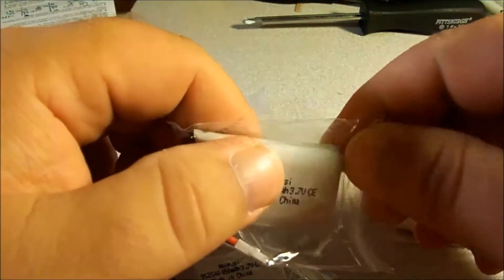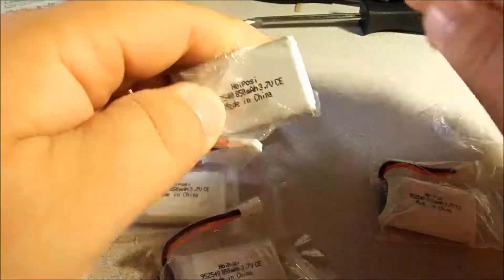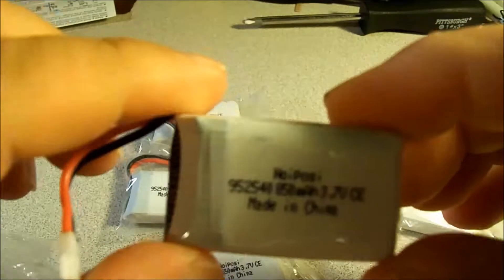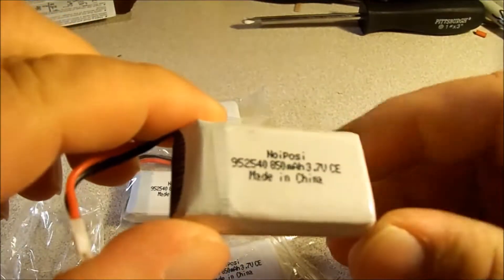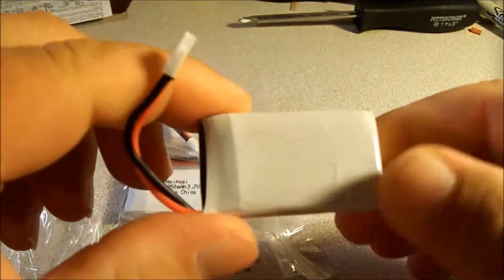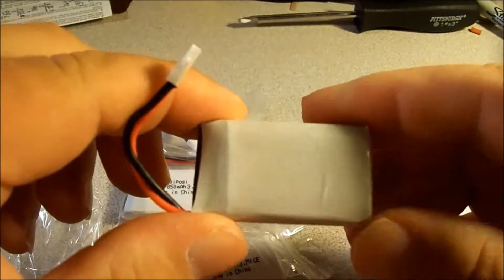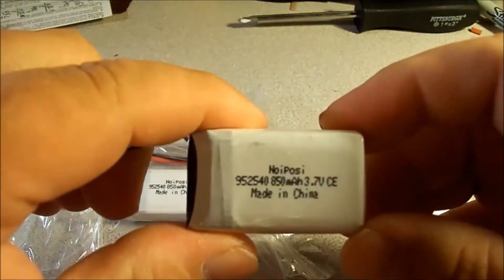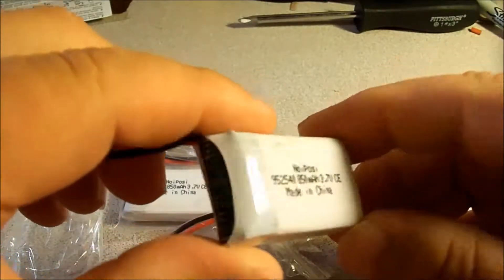Let's take a look at the batteries first. I really like the white shrink wrap because that allows me to easily label my batteries. That way I know which batteries have been charged and which need to be charged.